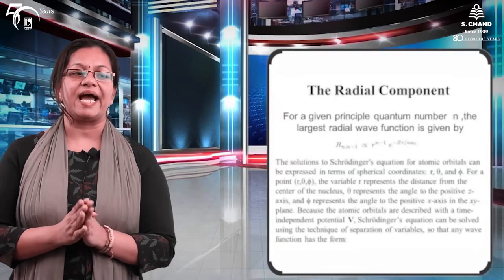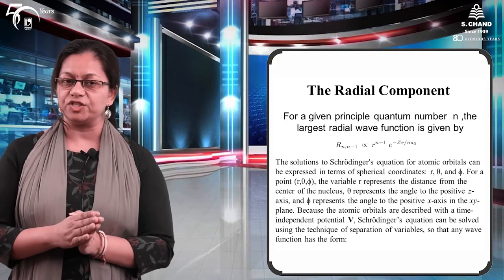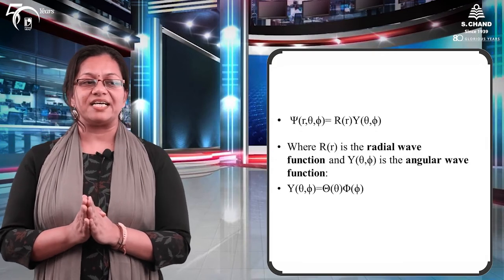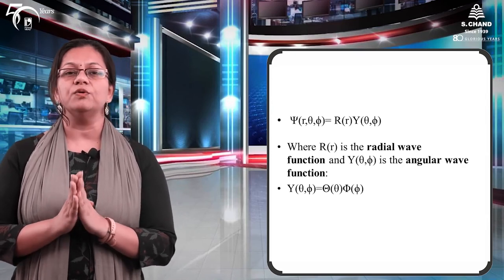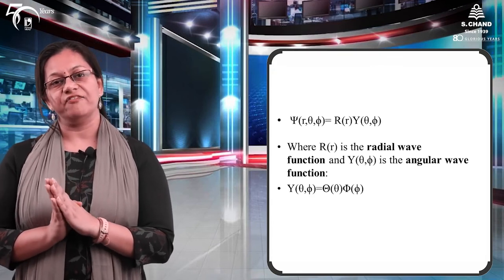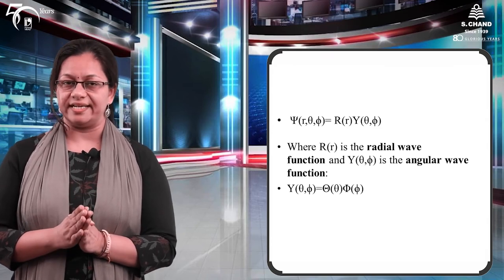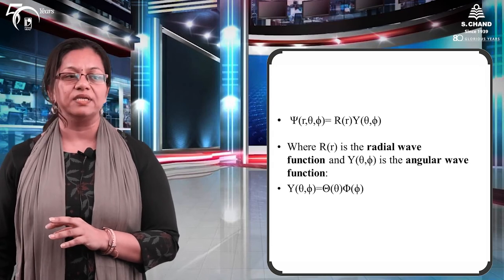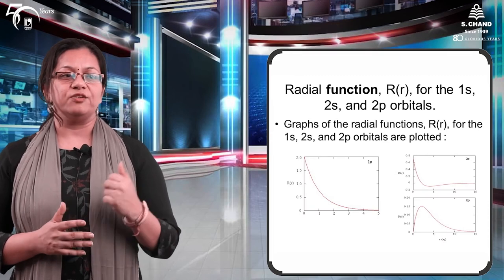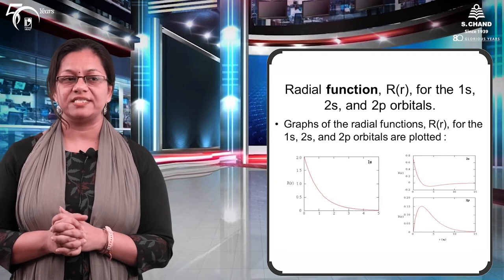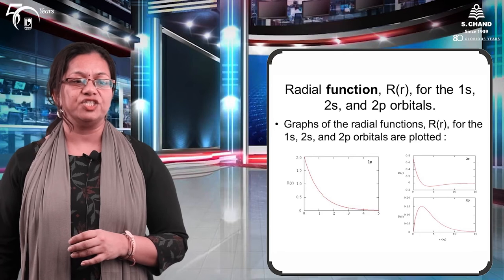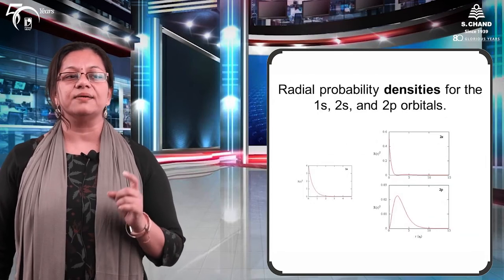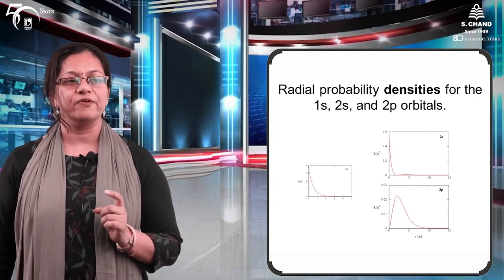Schrödinger differentiated his equation in polar coordinates, obtaining two components: the radial wave function R(r) and the angular wave function Y(θ,φ). The total wave function is χ(r,θ,φ) = R(r)·Y(θ,φ). This allows calculation of the shapes of orbitals. The radial function and probability densities change with respect to the radius r for 1s, 2s, and 2p orbitals.